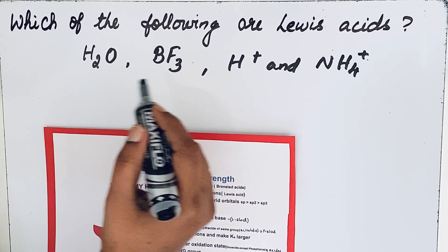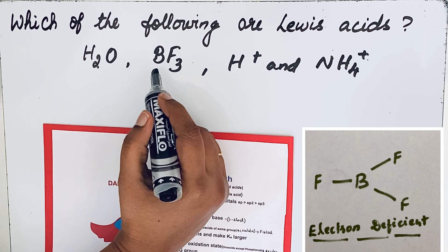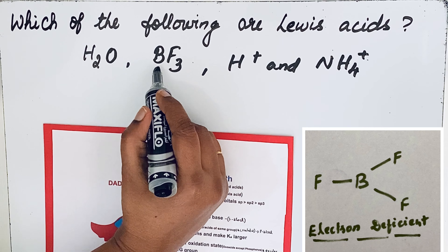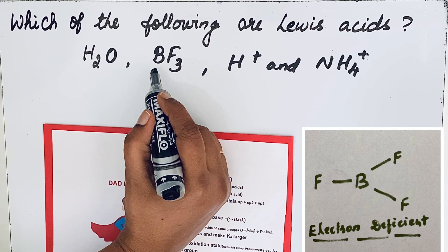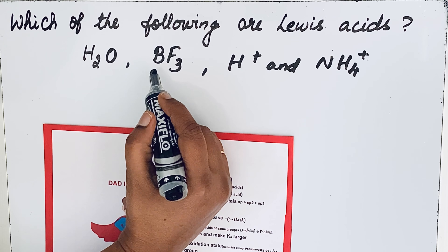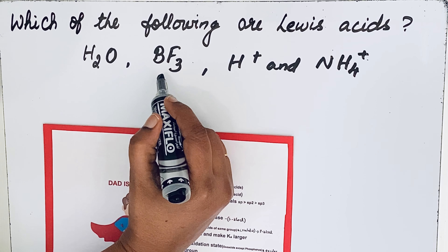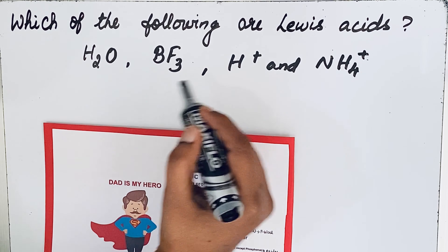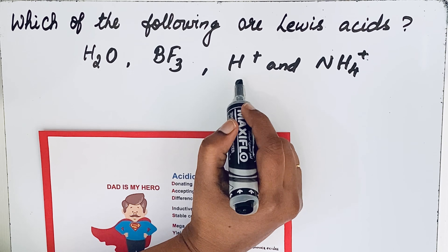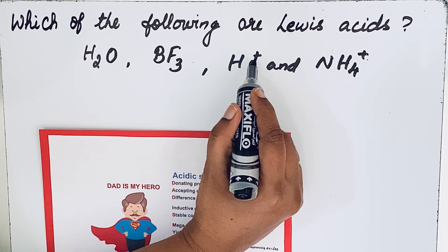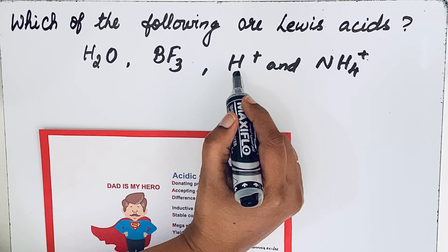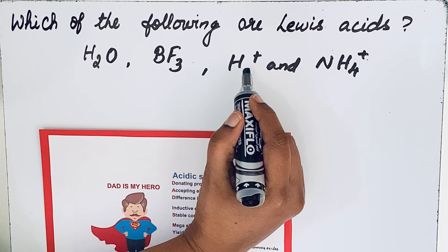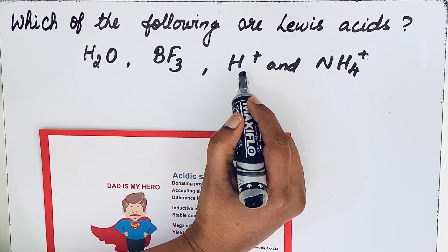Moving to BF₃: the central atom is boron, which is electron deficient, so it will accept electrons — therefore BF₃ is a Lewis acid. Next, H⁺: it is a positive ion with no electrons, so it accepts electrons, making it also a Lewis acid.